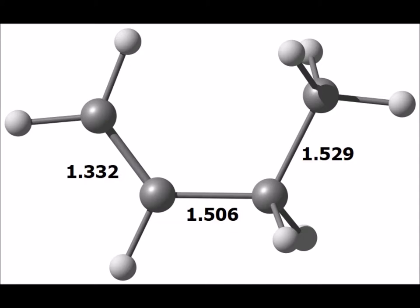This is the optimized structure of the product, 1-butene, and we clearly see the carbon-carbon double bond has the short 1.332 angstrom length, whereas the single bonds have lengths on the order of 1.5 angstroms.